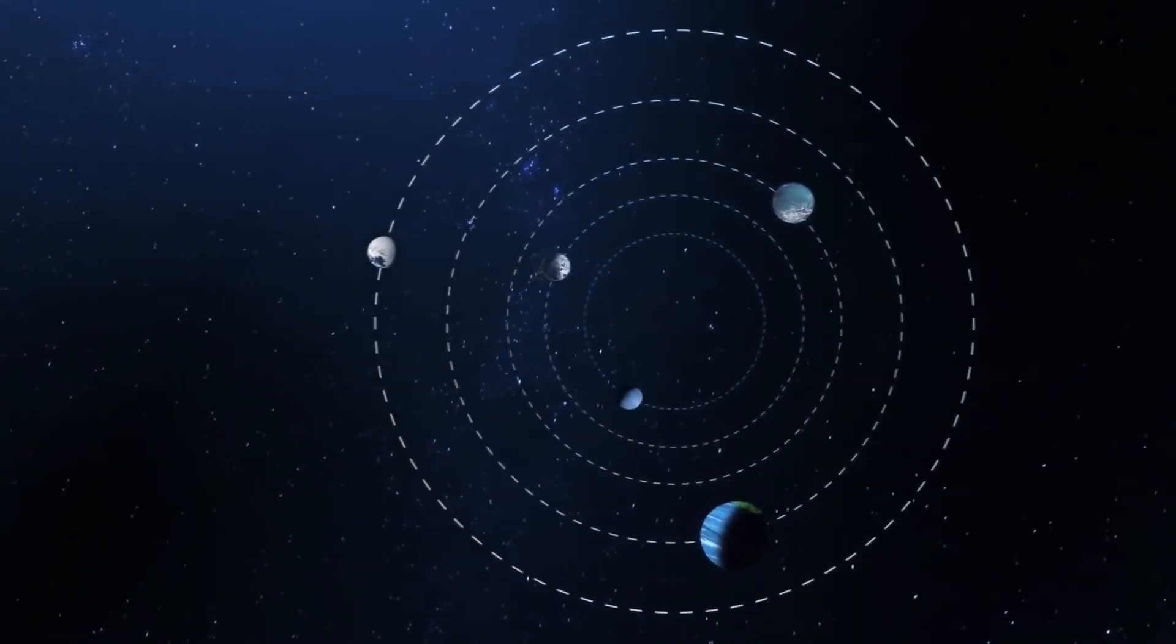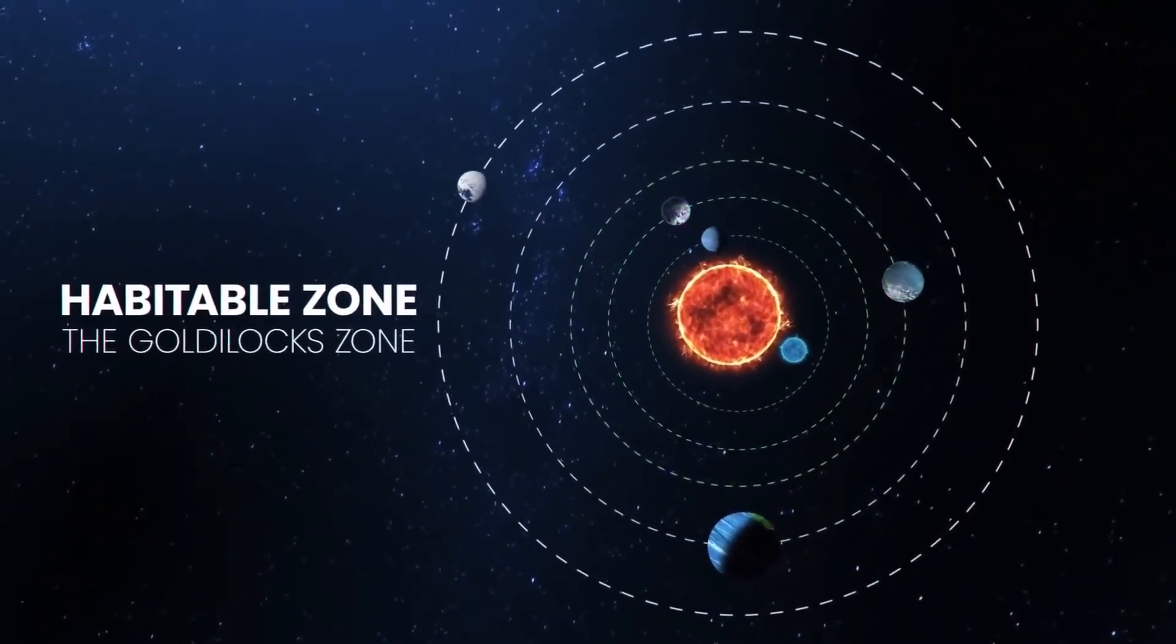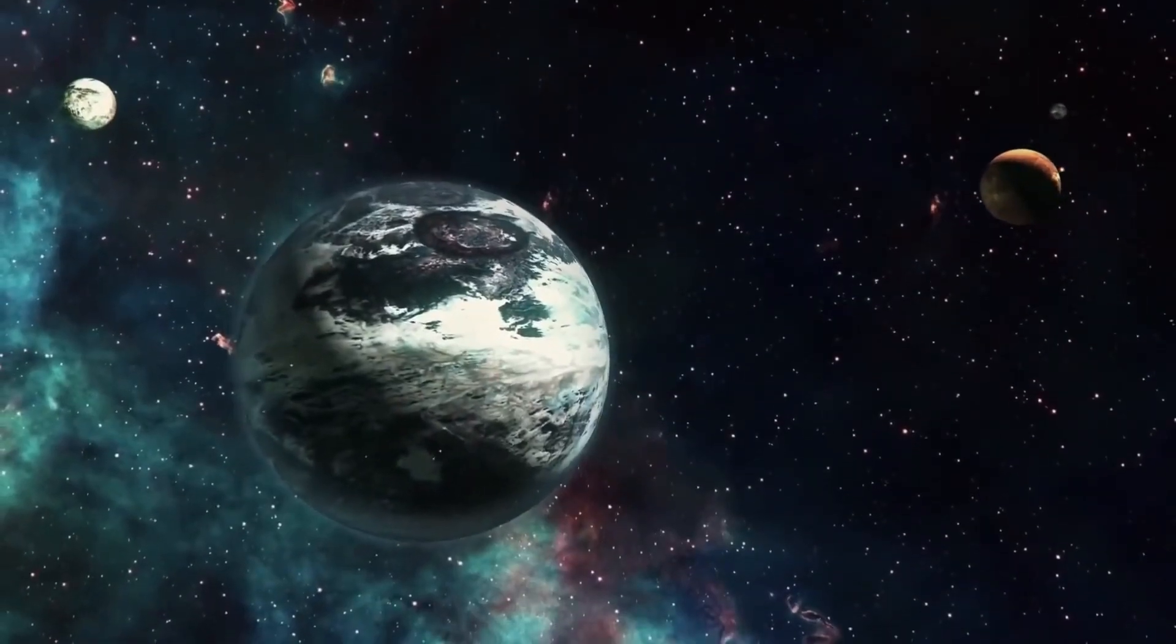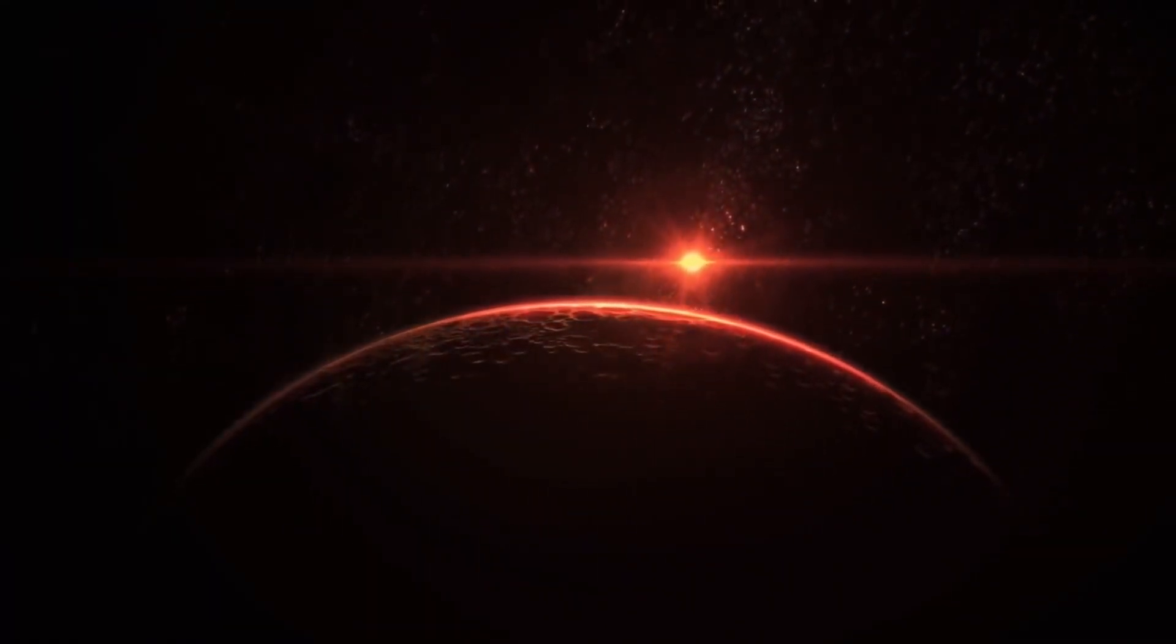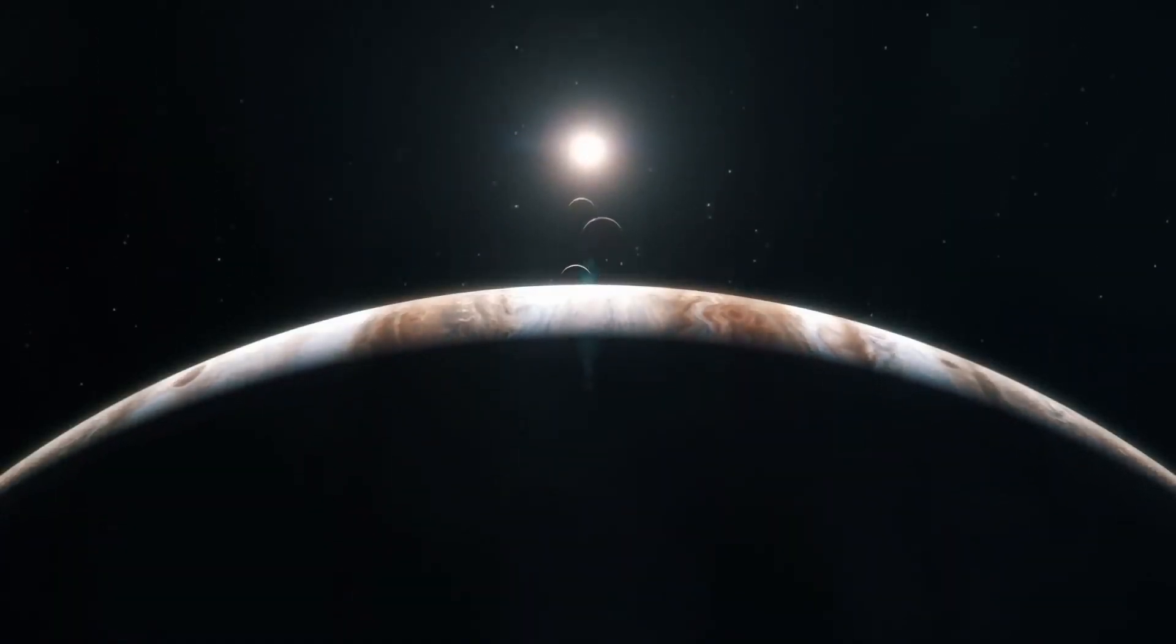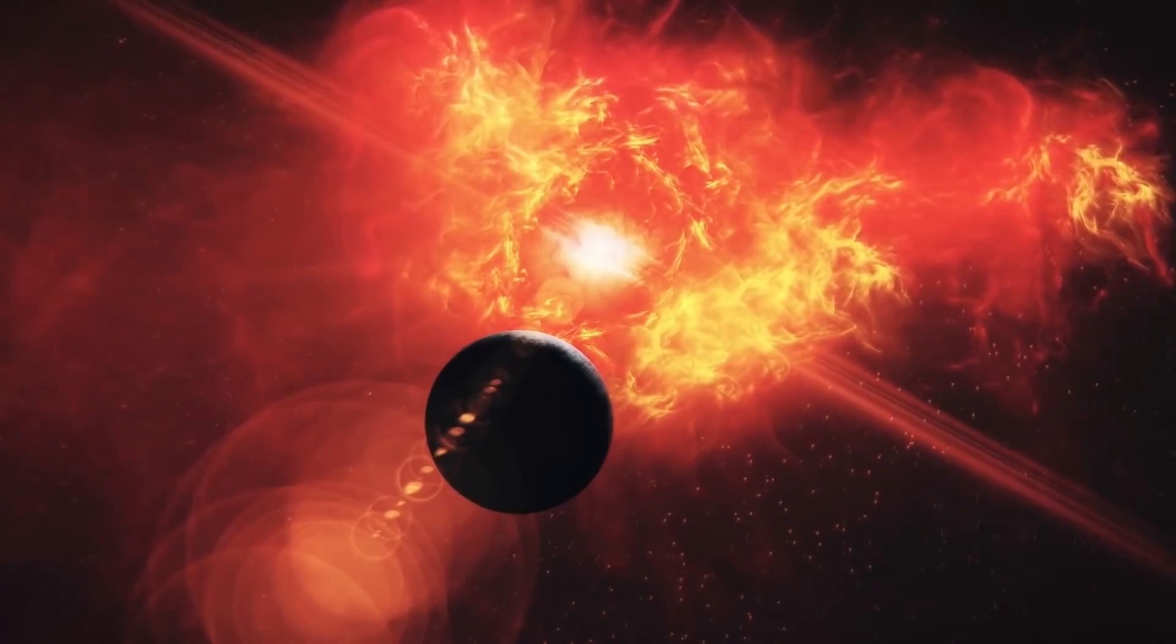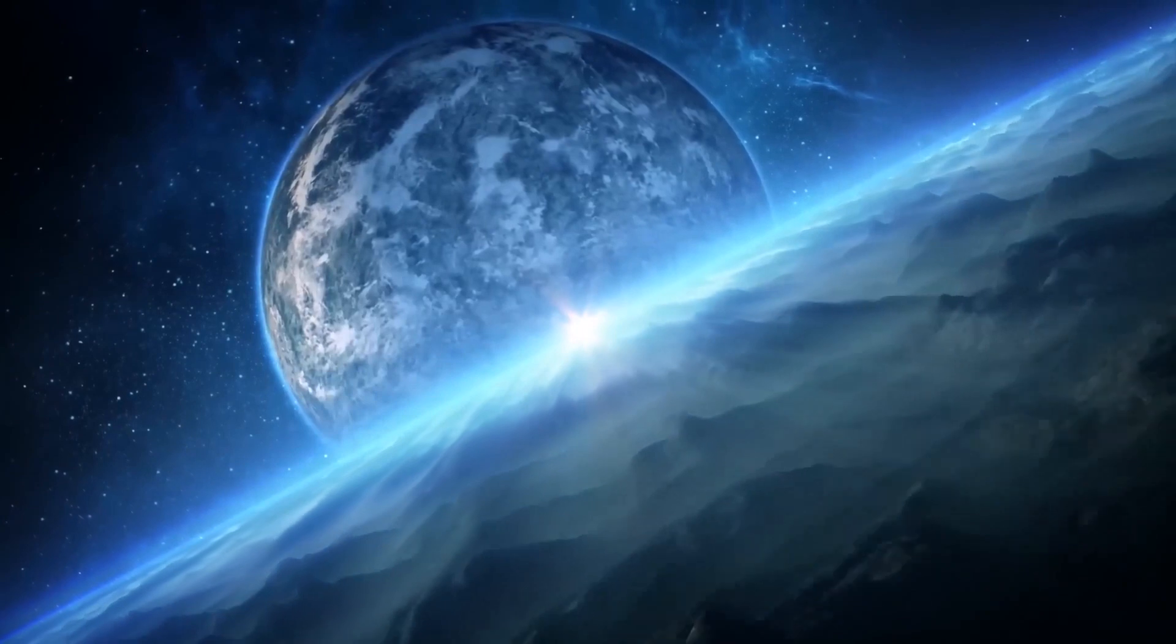One of the most exciting things about Kepler-22b is that it orbits in the habitable zone of its star. The habitable zone is the range of distances from a star where the temperature is just right for liquid water to exist on the surface of a planet. Liquid water is essential for life as we know it. Kepler-22b orbits its star once every 290 days, which is very similar to Earth's orbital period of 365 days. The planet's surface temperature is estimated to be between minus 11 and 22 degrees Celsius, which is also similar to Earth's temperature range.